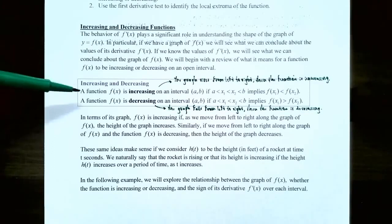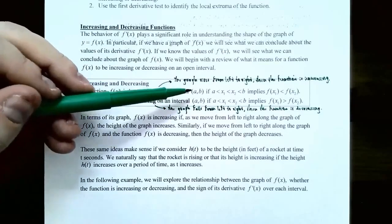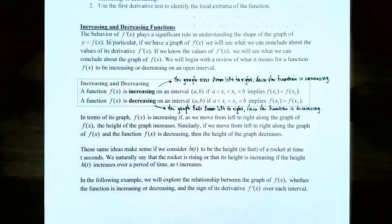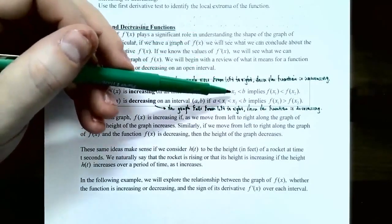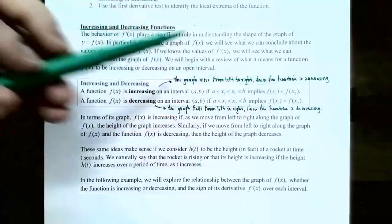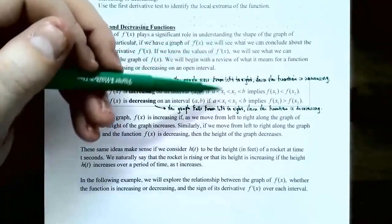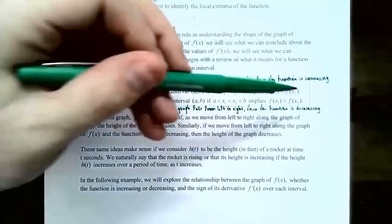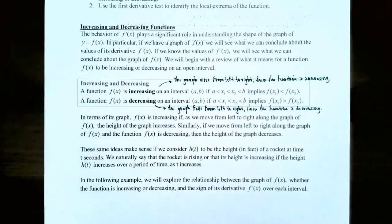A function f is increasing on an interval (a, b) where a < x₁ < x₂ < b implies that f(x₁) < f(x₂). So if x₁ is to the left of x₂, the y-value at x₁ is below the y-value at x₂. This means the function is increasing if the graph rises from left to right.